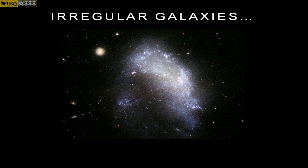Next we come to irregulars. Irregulars are sort of strange — they're either not large enough to form a nice spiral or a nice elliptical, but they're too large to really be considered star clusters, so they get classed as galaxies. They can also happen through mergers. When you have two galaxies interacting, it can strip things out and disturb all the structure in them, and you can get some pretty amazing galaxy shapes when that happens.